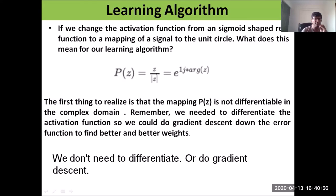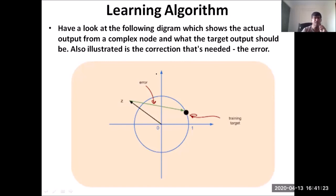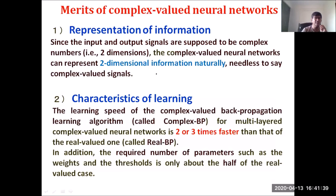If we change the activation function from a real-valued sigmoid to a mapping to the unit circle, what does this mean to the learning algorithm? The first thing to realize is that this mapping function pz is not differentiable in the complex domain. Remember, we also need to differentiate activation functions to do gradient descent down the error function to find better weights. In this case, since it is not differentiable, gradient descent is not applicable. This diagram illustrates the actual output from the complex node, the target output, and the error or correlation needed.